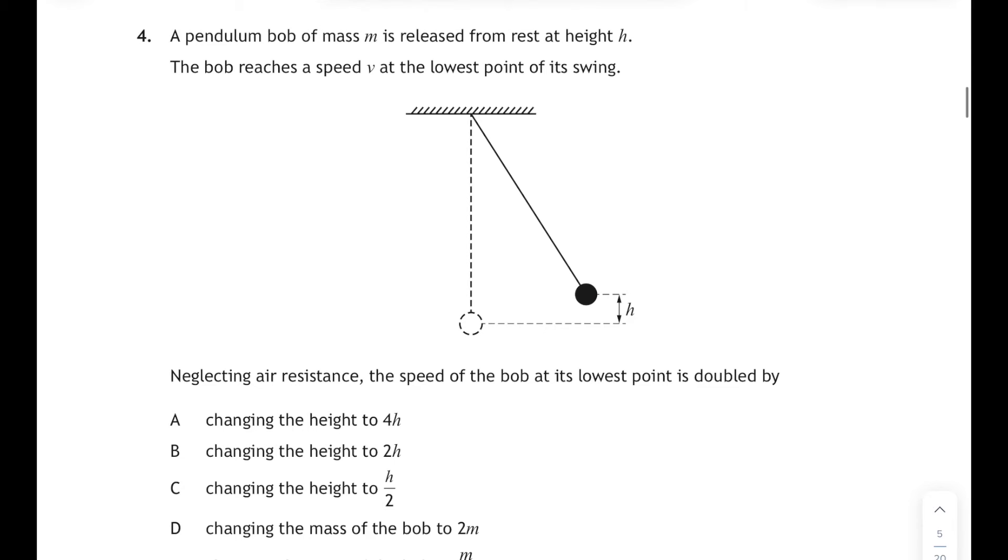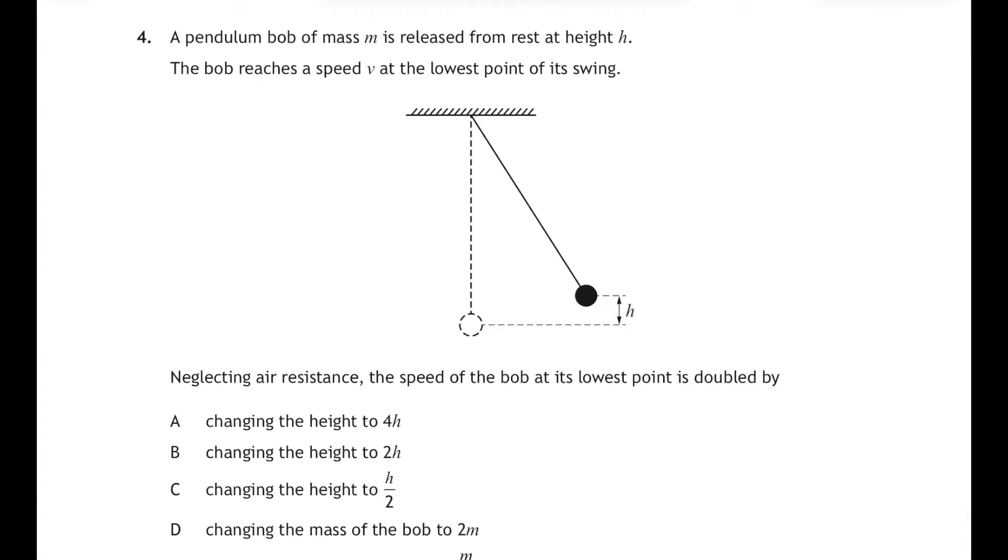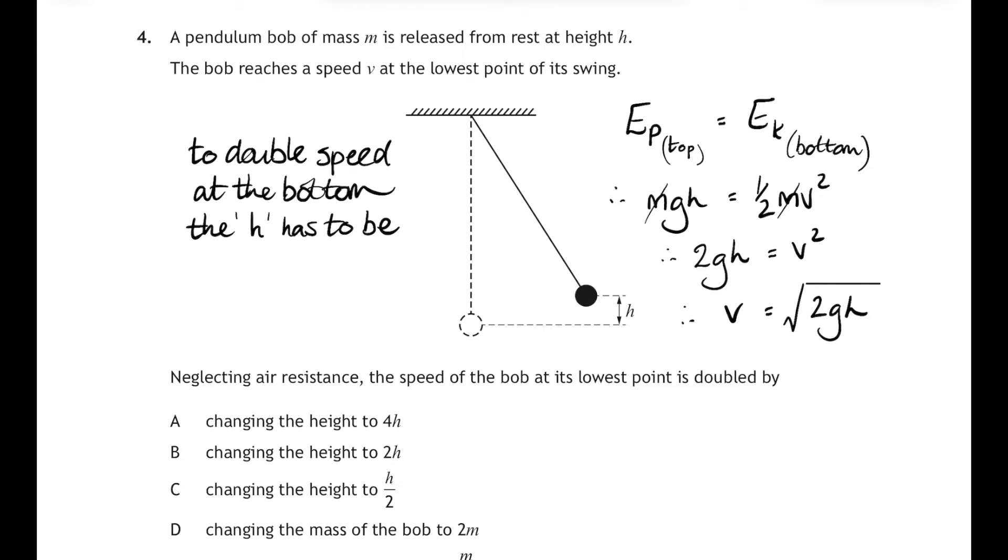Question four then. A pendulum bob of mass m is released from rest at height h and the bob reaches a speed v at its lowest point of its swing and neglecting air resistance then the speed of the bob at its lowest point would be doubled by... hmm you might think here that just by doubling the height it'll double the speed at the bottom but in fact what we need to think about here is energy conservation. The potential energy at the top will be equal to the kinetic energy at the bottom so mgh equals a half mv squared. We can cancel out the m's and we're left with 2gh equals v squared, so v is the square root of 2gh. So if we want to double the speed at the bottom then the height would have to be four times as great because the square root of 4 is equal to 2. So for twice the speed we need four times the height and that corresponds to answer A. And also interesting to note if you look at that equation on the right hand side, the mass doesn't matter anyway.